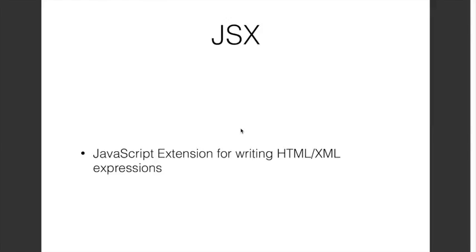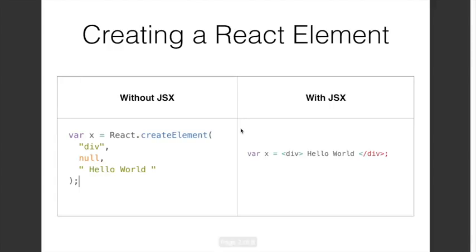In React we have the notion of a React element that describes an HTML element. To create a React element without JSX we have to invoke a React createElement call and pass the description of the HTML elements as parameters. Note that this makes for really terse syntax. Instead, with JSX we can write the same code as if we were writing HTML.